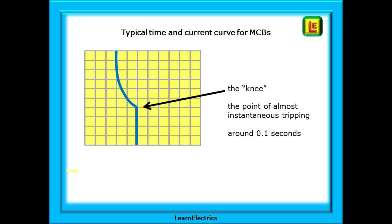This is a typical time and current curve for an MCB, a nice smooth curve for the most part. But they also have what is called a knee, a point at which they will trigger almost instantly which can be as quick as 0.1 seconds or less.